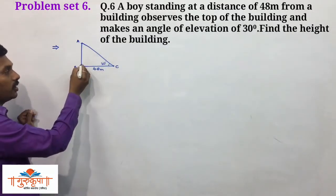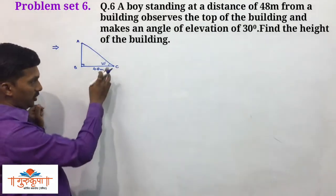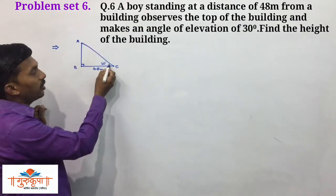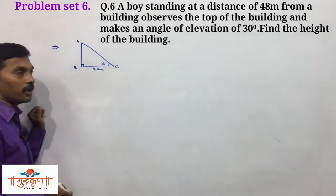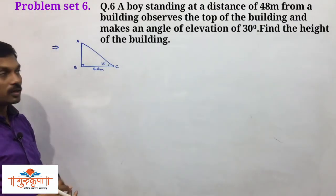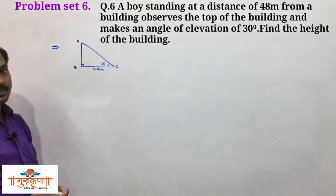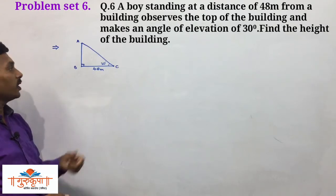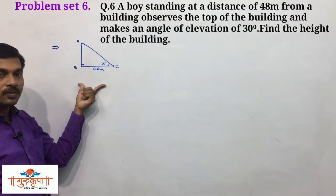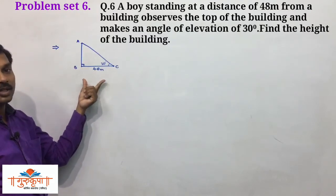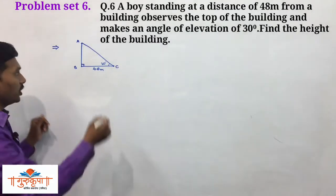Segment AB is the building. Point C is the position of the boy who observes the top of the building and gets the angle of elevation of 30 degrees. If the boy is 48 meters away from the building, find the height of the building. We represent the situation using a diagram with three steps: draw the diagram, describe the diagram, and use trigonometric ratios.